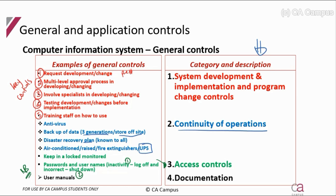To make the system user-friendly, there should be manuals, which falls under the documentation category. These are the categories you should be aware of. All these general controls need to be in place before the system goes live — before orders, payroll, and other transactions are processed — to ensure it is a decent, well-controlled system to operate with.